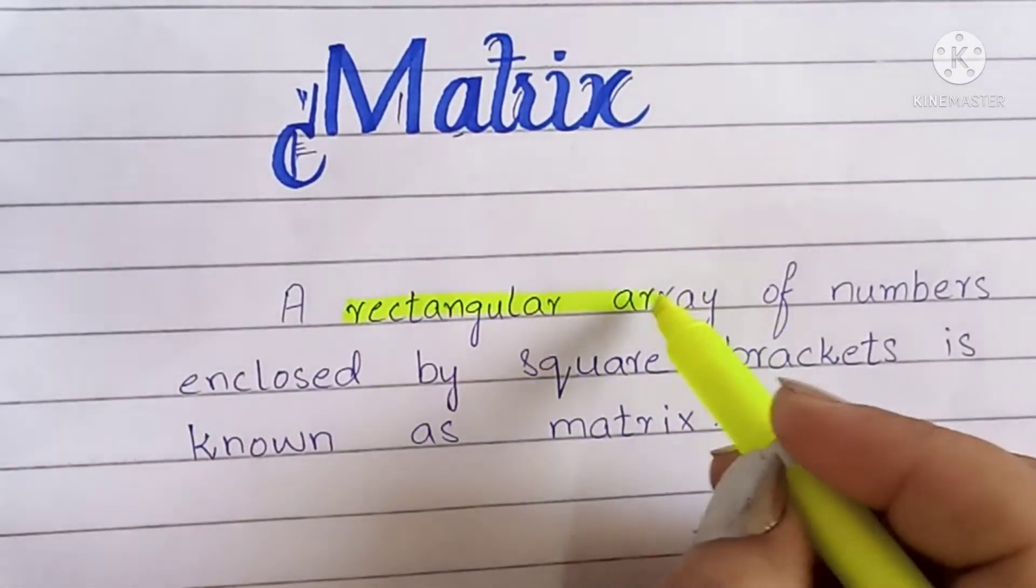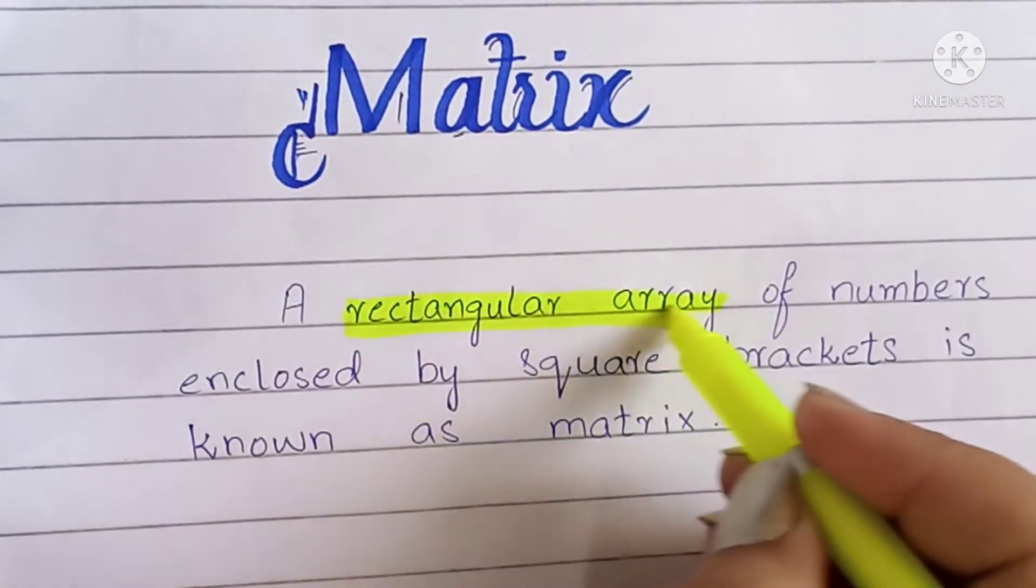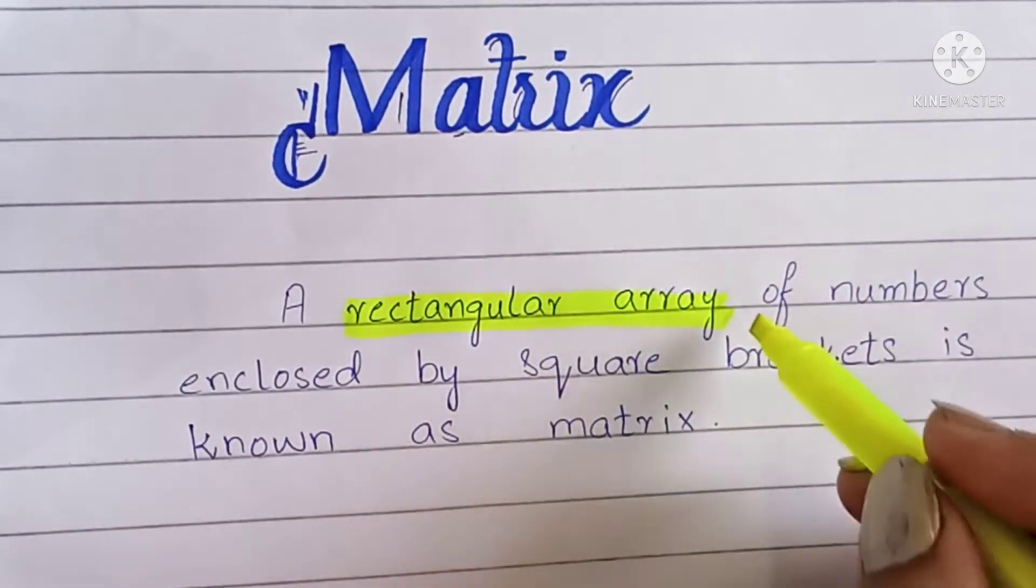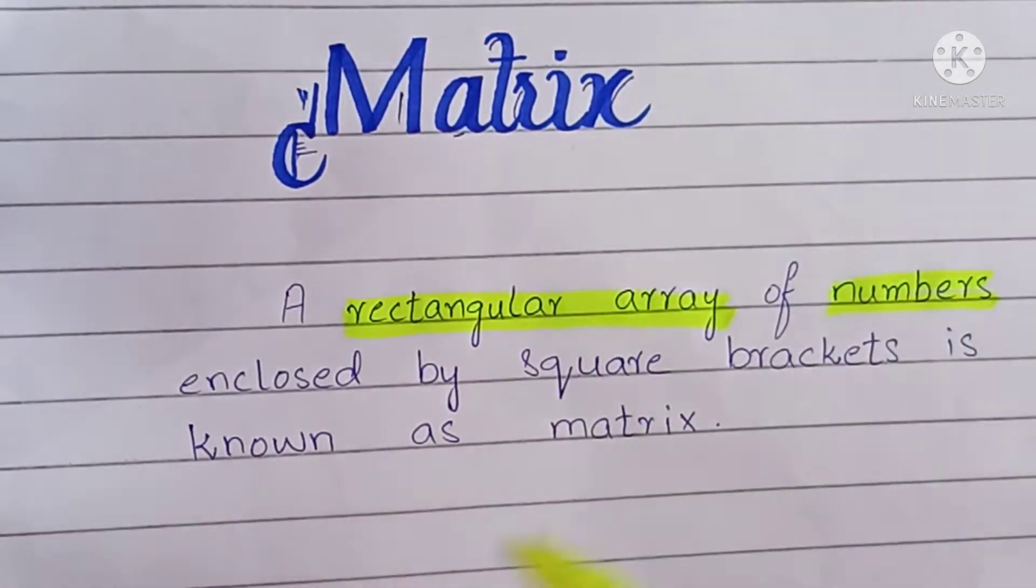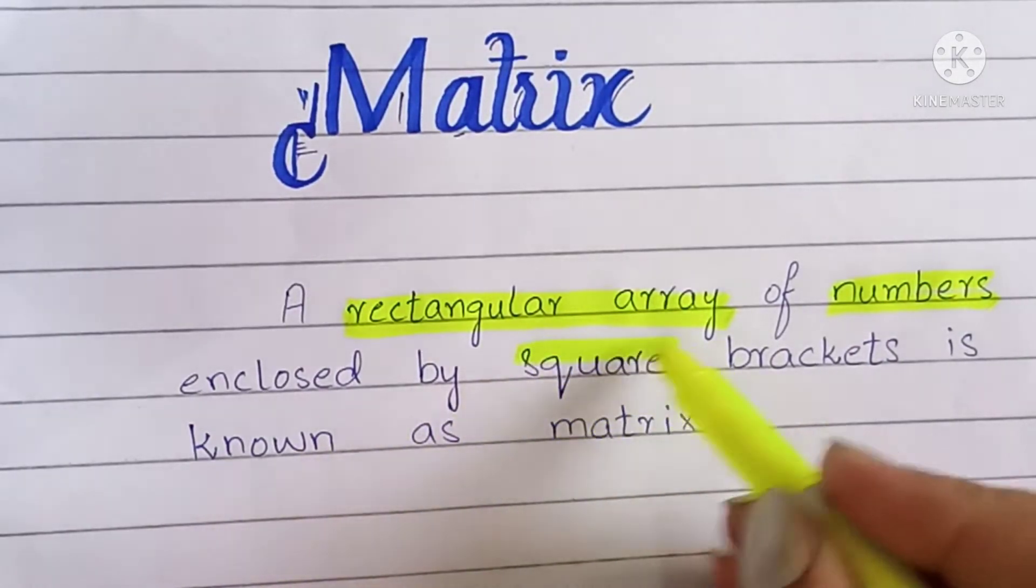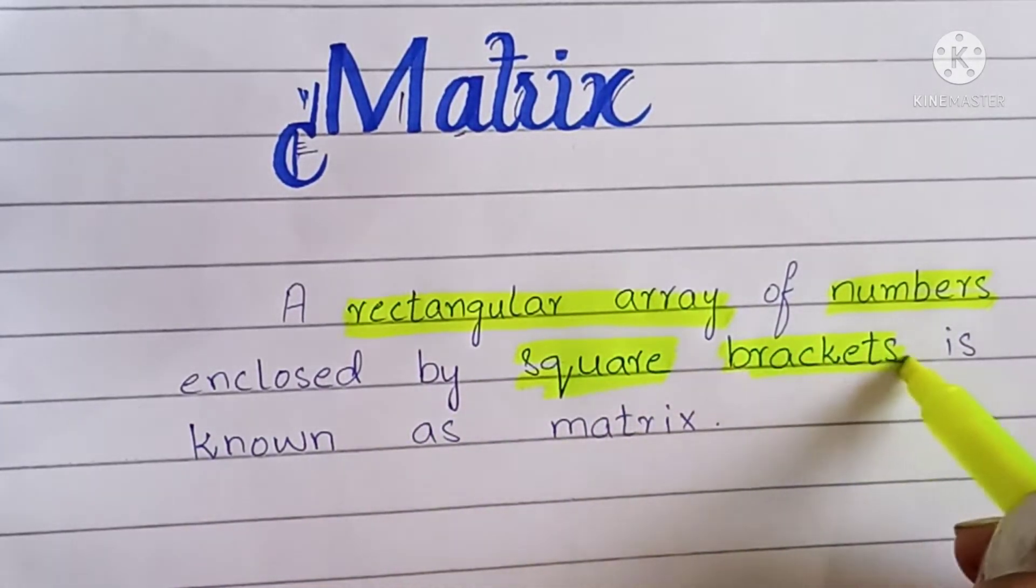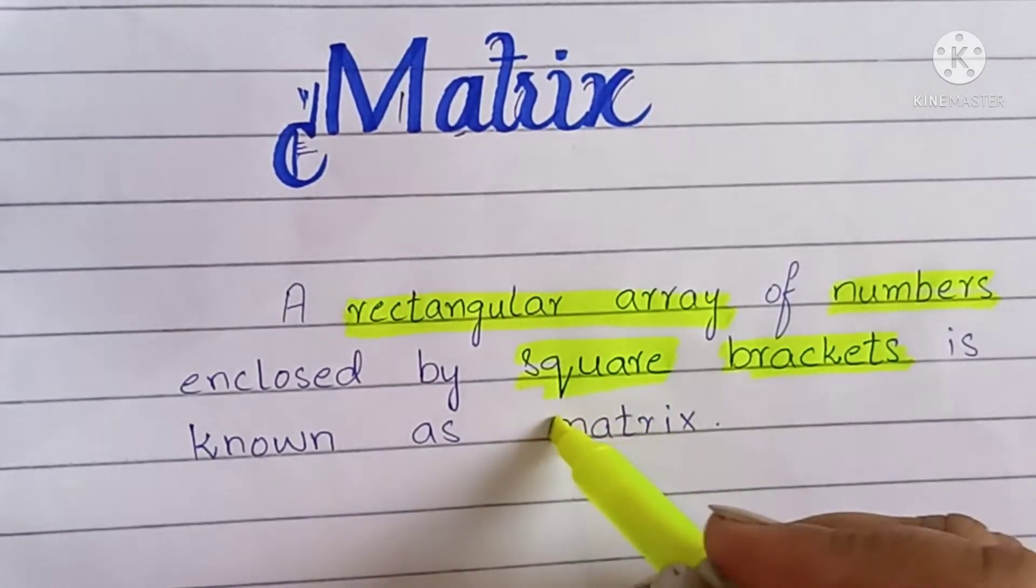Array means arrangement or to put something in order. So rectangular array of numbers means arrangement of numbers in rectangular form and closed by square brackets is known as matrix.